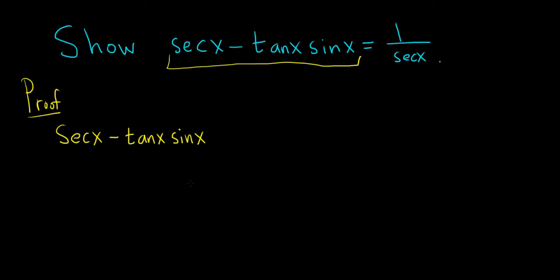The natural thing to do is write everything in terms of sine and cosine. That's usually a good idea. Secant is 1 over cosine, tangent is sine over cosine, and we still have the sine x.